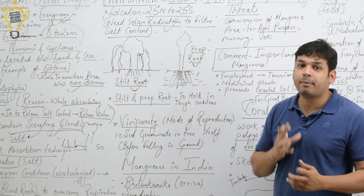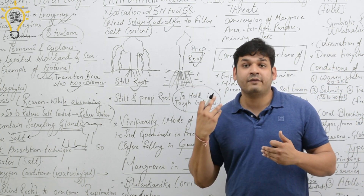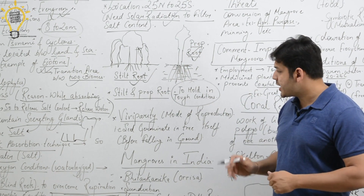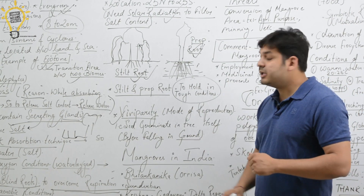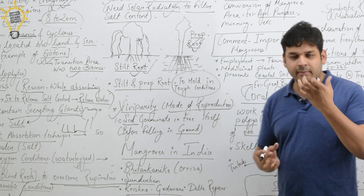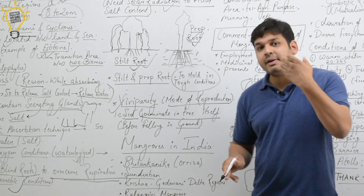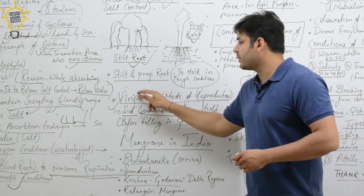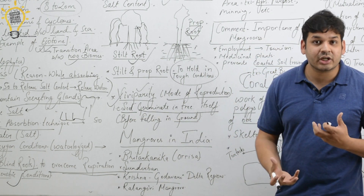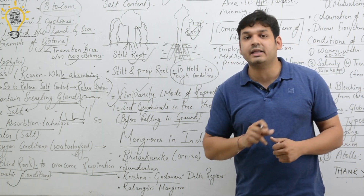Stilt and prop roots help mangroves hold on in tough conditions — where there are tsunamis and waves every day. These roots provide stability. Another important feature is the mode of reproduction: viviparity. The seeds germinate on the tree itself before falling into the ground, because if they fell directly into the salty water, they would not grow. So they germinate on the tree — this is known as the viviparity mode of reproduction.